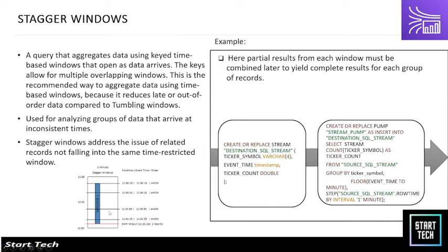For a staggered window, if we want to aggregate counts of a ticker symbol within a window, we create a stream, use a PUMP operation to insert into a destination stream, SELECT with GROUP BY, and then specify a FLOOR function for the event time and a STEP function to define the interval step. This handles data arriving at inconsistent times effectively.